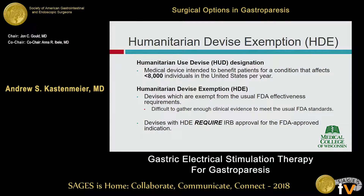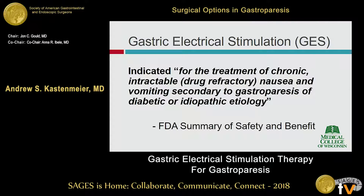This is a humanitarian use device designation, which means it's a medical device intended for patients affected in less than 8,000 individuals per year. It has a humanitarian device exemption, which exempts it from the usual FDA effectiveness requirements, largely due to the inability to accumulate large groups of patients to meet FDA standards. Any device with a humanitarian device exemption requires IRB approval. The approved indication, as summarized by the FDA, is for the treatment of chronic intractable, drug-refractory nausea and vomiting secondary to gastroparesis of diabetic or idiopathic etiology.